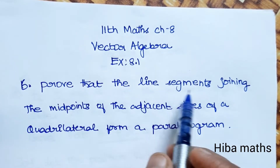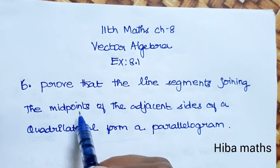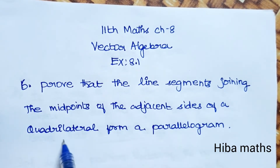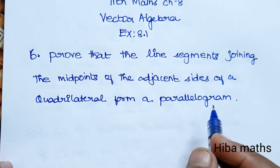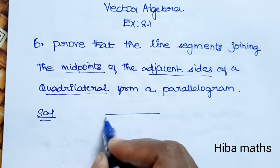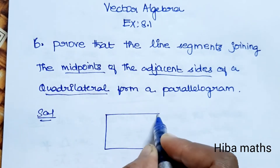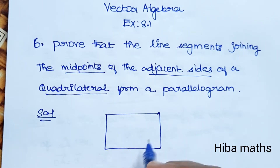Prove that the line segments joining the midpoints of the adjacent sides of a quadrilateral form a parallelogram. So the question is, we explain a diagram. A quadrilateral has 4 sides.